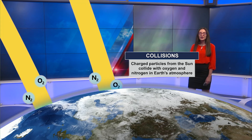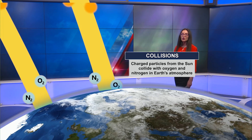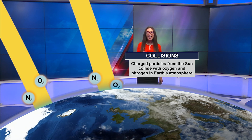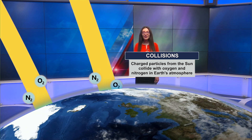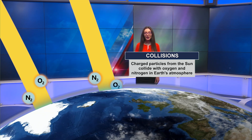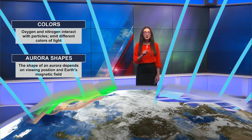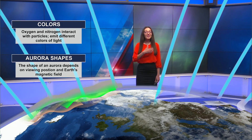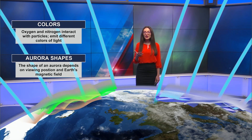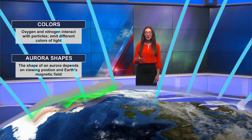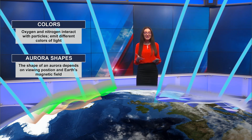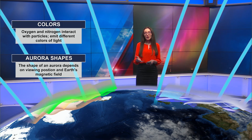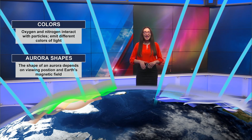When that happens, we see that those charged particles interact with oxygen and nitrogen in the Earth's atmosphere, and it's those specific interactions with those charged particles that result in different colors to form, and that's why we see things like the northern lights, or what you may know as aurora borealis.